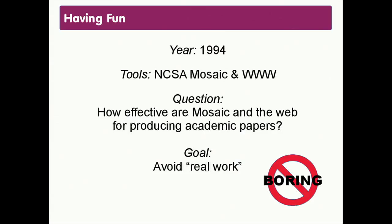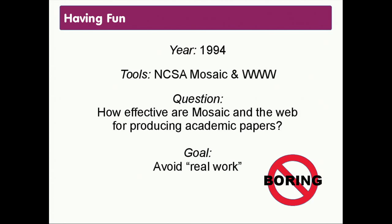The year was 1994. A new package had just been released called NCSA Mosaic, on top of this thing called the World Wide Web. This is when the web was first becoming very popular. Mosaic was, of course, one of the first graphical web browsers with any traction. My PhD research was actually on hypermedia systems, but I hadn't done anything with them since finishing my dissertation about five years prior. So the question I had was: can we actually use this new environment to produce academic papers? Is it a valid publishing medium?